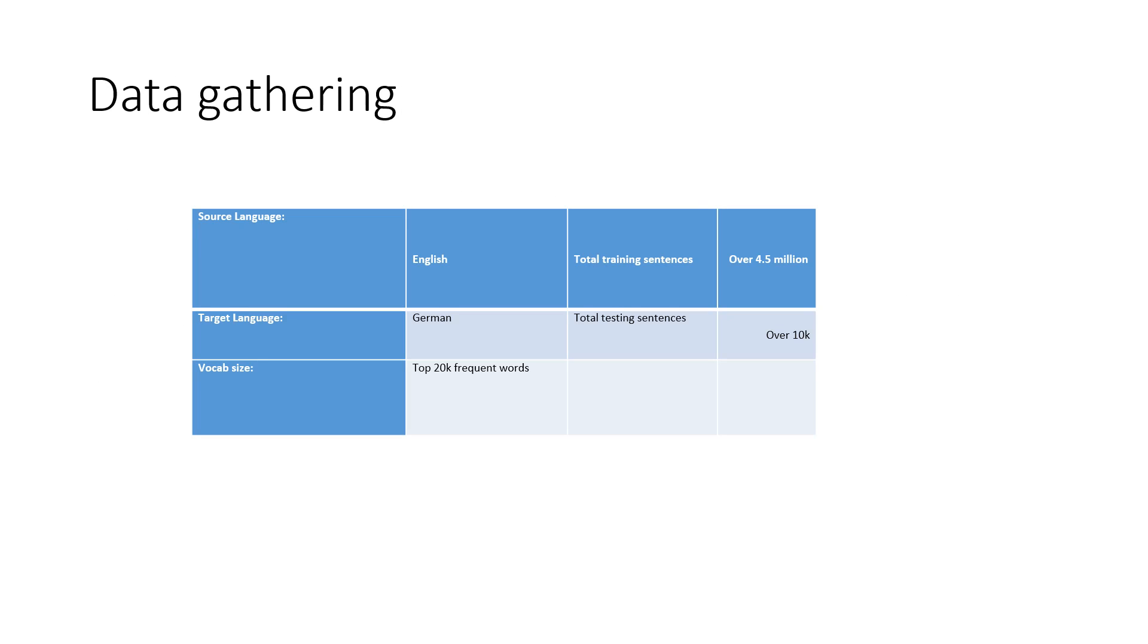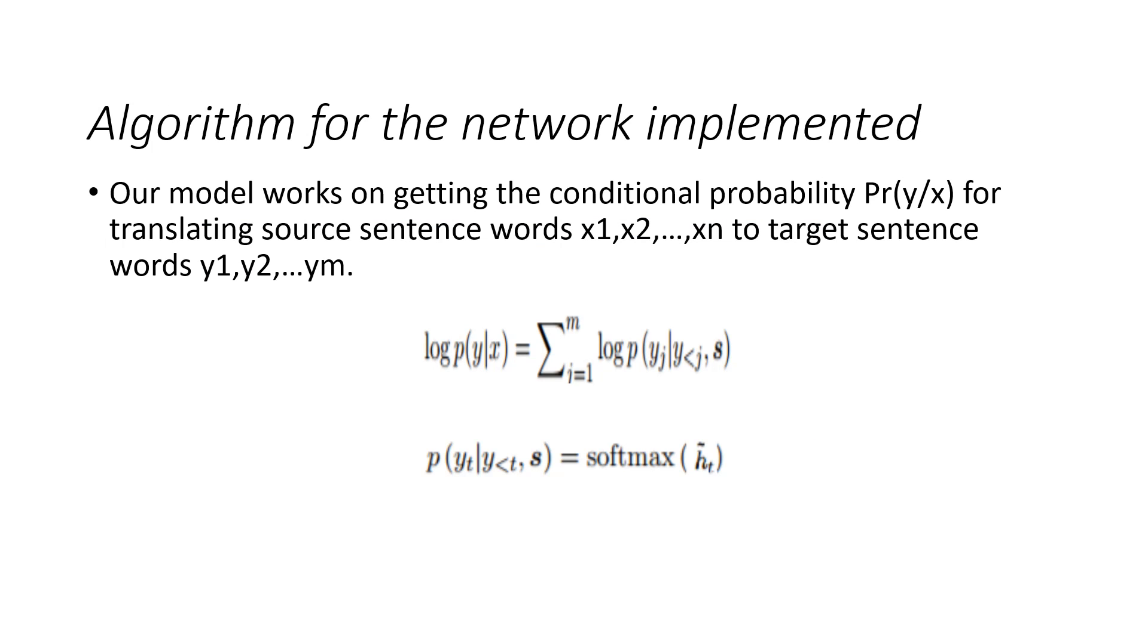In data-gathering, the data source that we collected was the source language was English and the target language which we were targeting was German. The total testing sentences were around 10,000. The total training sentences pair of English to German was around 4.5 million sentence pairs. The vocabulary size that we chose for this project were the top 20,000 frequent words. The remaining words were decoded using character-level model.